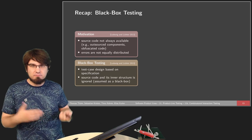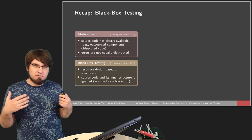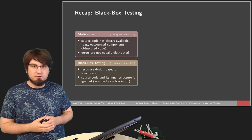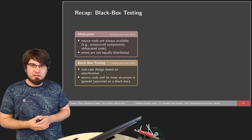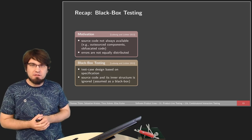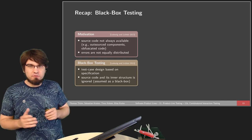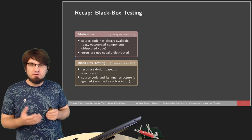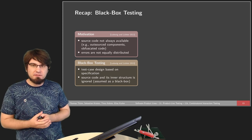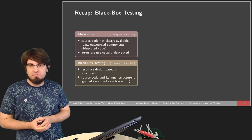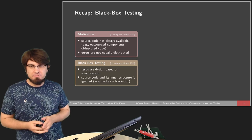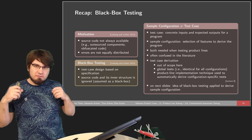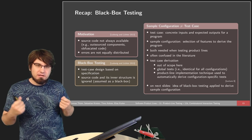One reasonable approach we could take is black box testing, which means we just ignore the source code completely, even if it's known to us. We treat the whole system as a black box we can't look inside. We just know we can put something in as an input value and get some output or observe some behavior, and from this we guess whether there's a bug.